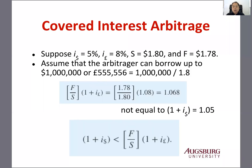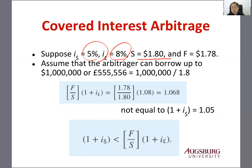Now let's look at the arbitrage opportunity that you can have if the interest rate parity doesn't hold. Suppose we have a dollar interest rate of 5% and a pound interest rate of 8%, a spot rate of $1.80, and the forward rate of $1.78.